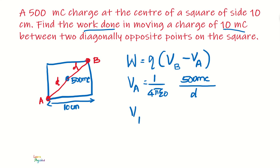And the potential at point B is 1 by 4 pi epsilon naught, once again 500 millicoulomb divided by the distance D, the distance between 500 millicoulomb to the point B.